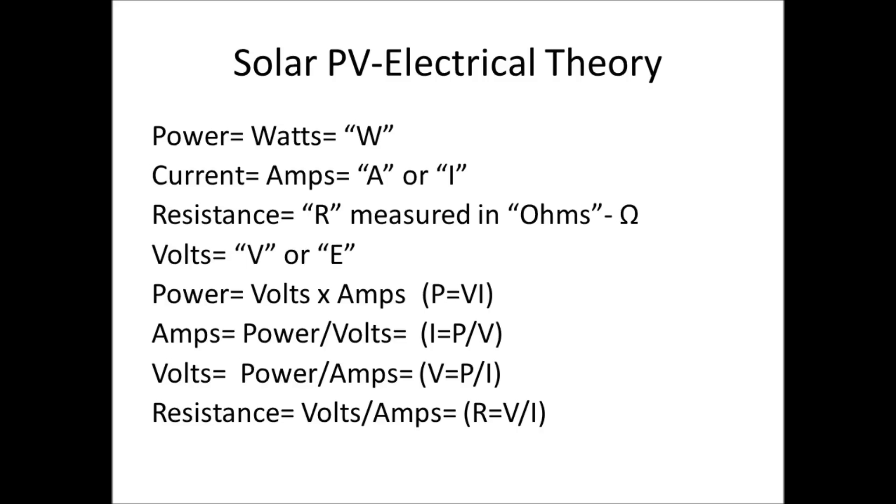Power equals watts, watts is denoted by a capital W. Current equals amps. You'll see amps written one of two ways: usually in a manufacturer's label like a television or DVD player, you'll see it denoted as an A. In electrical theory you'll usually see it denoted as an I when you're doing calculations.